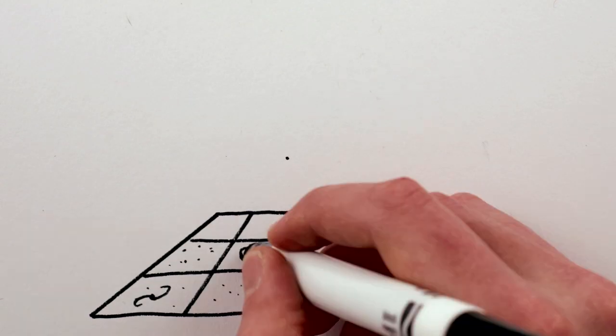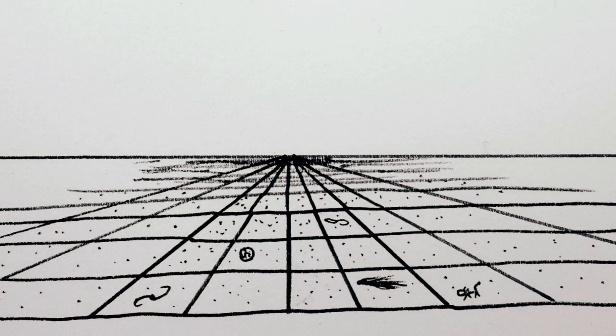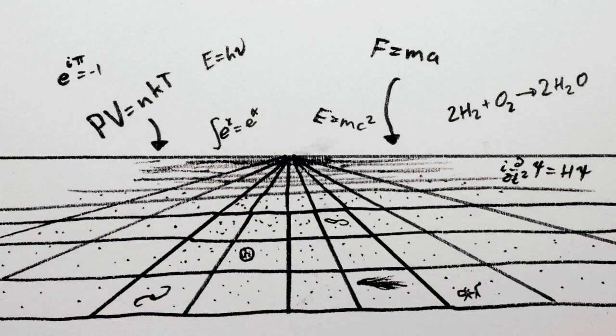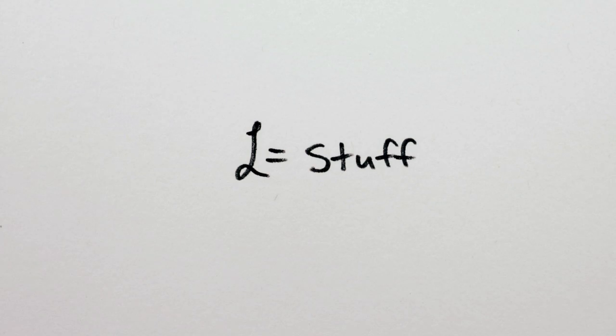Now the universe is a pretty big place, maybe even infinitely big, so it's reasonable to think that you might need a lot more than just one equation to describe it all. So why is the Standard Model so simple?